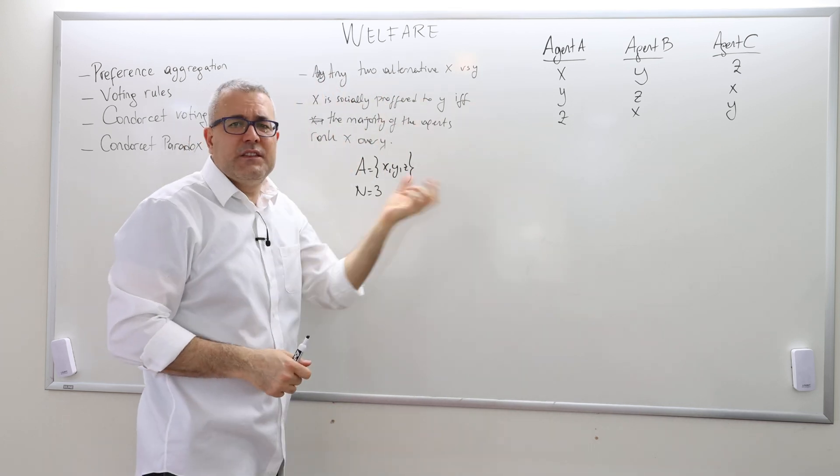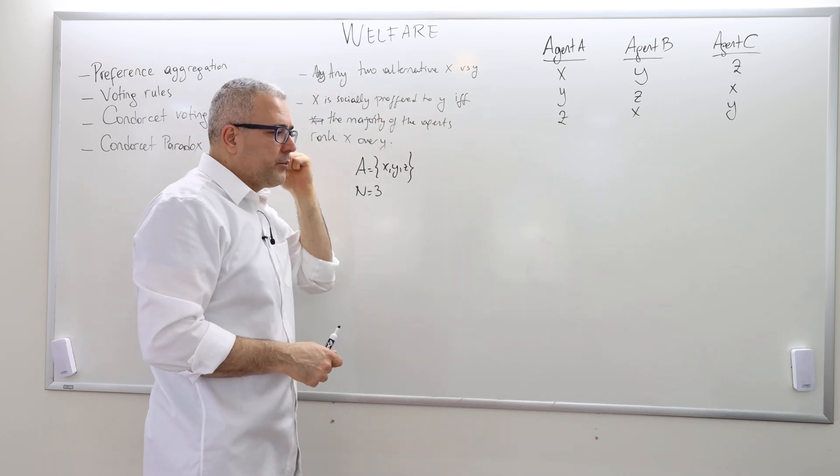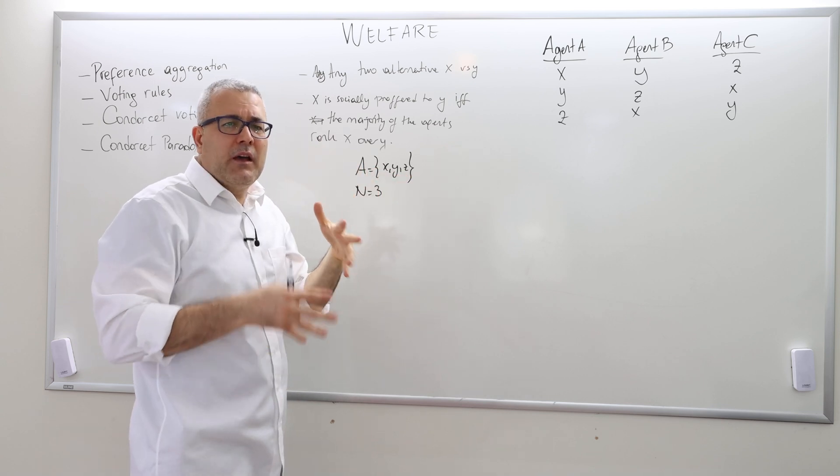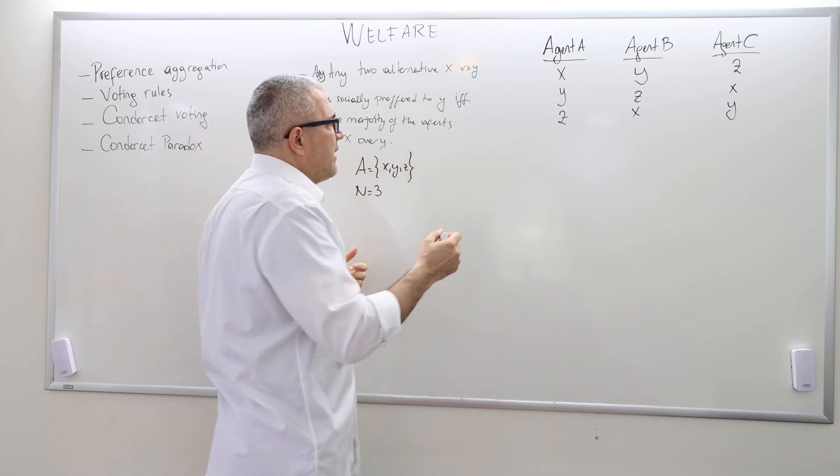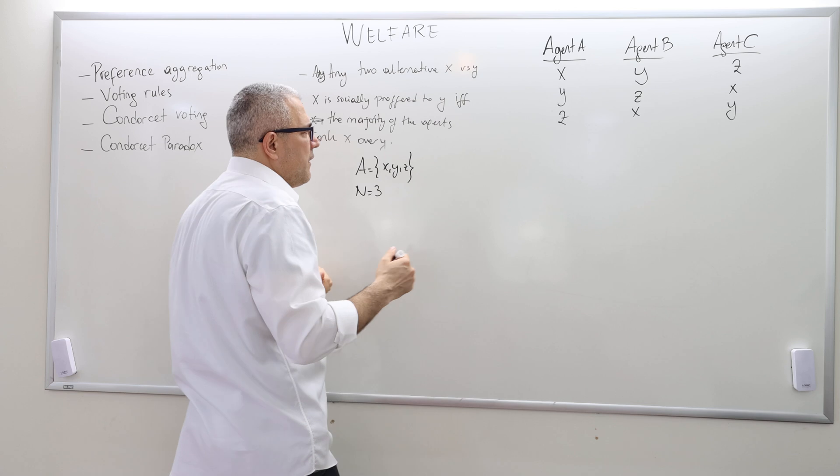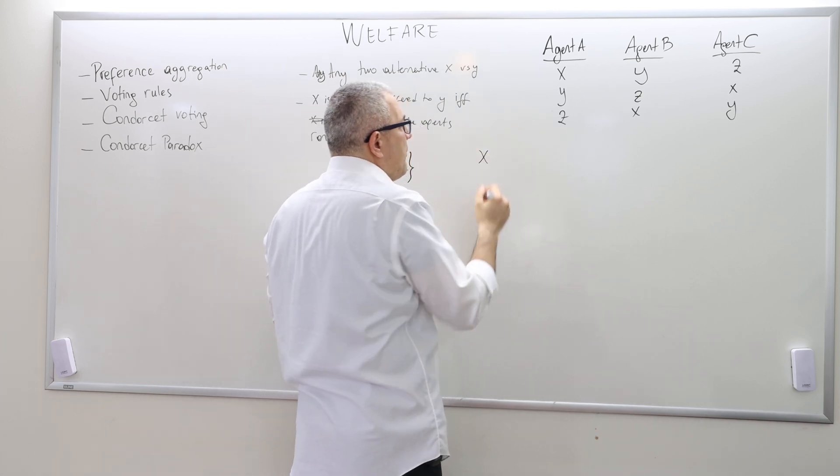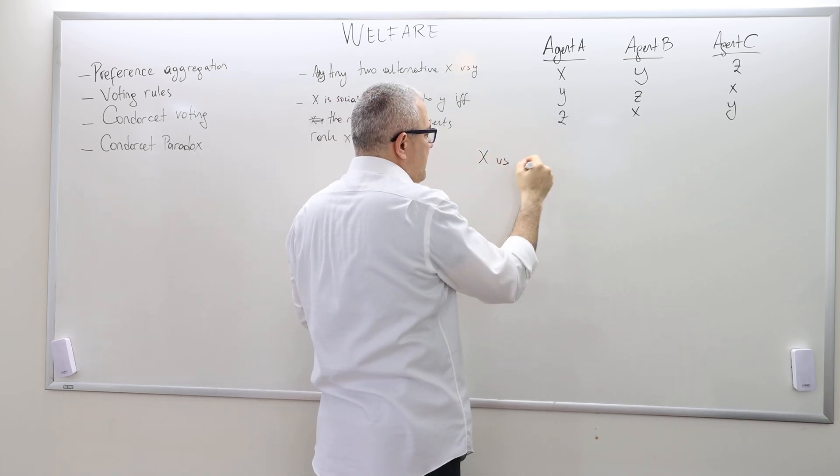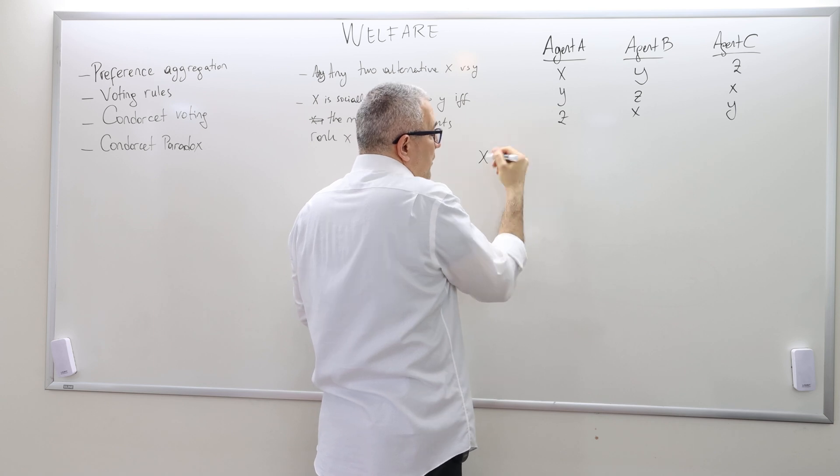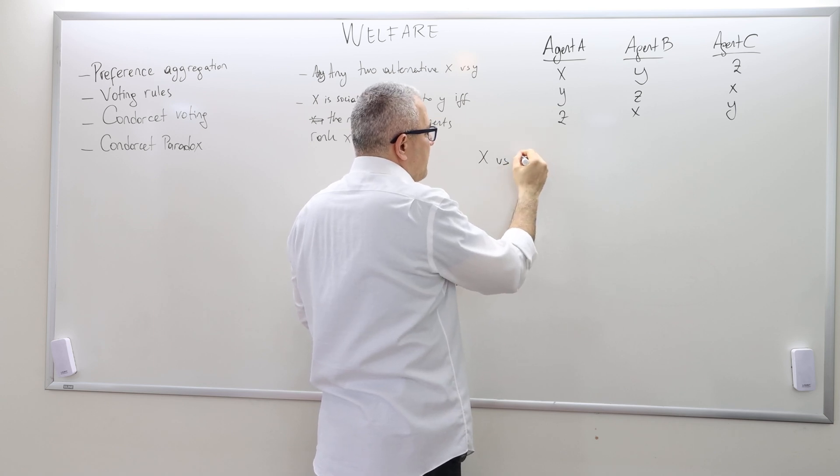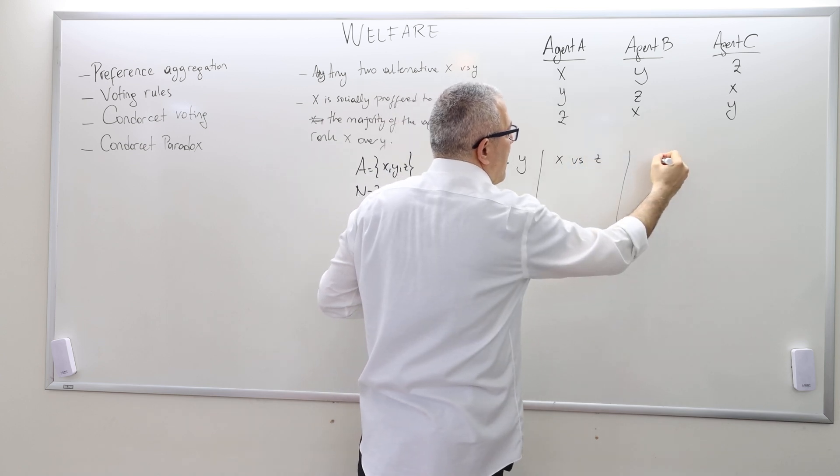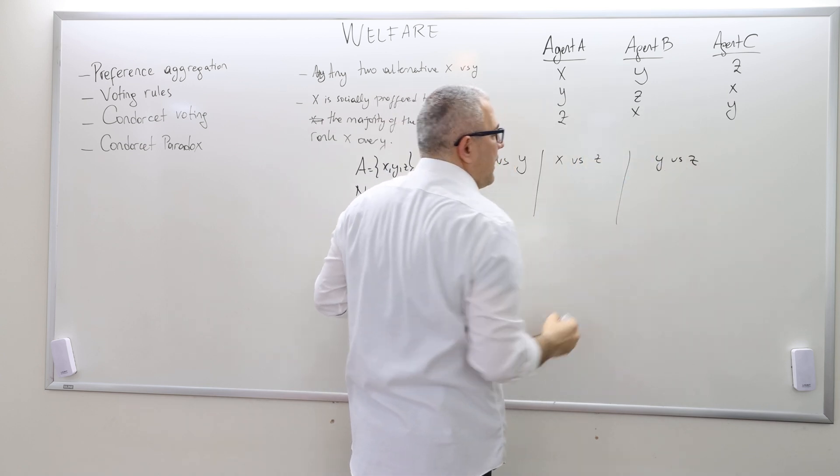And then given that this is the profile of preferences of the society, what can we say about the aggregate ranking according to Condorcet voting? Because I have three alternatives, Condorcet is going to make three comparisons: X versus Y, X versus Z, and then Y versus Z.